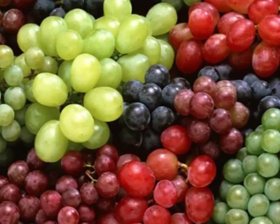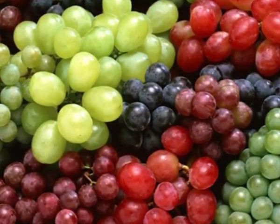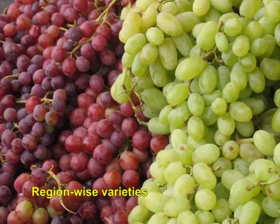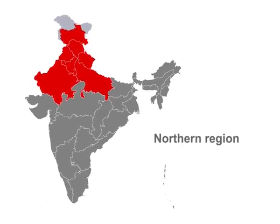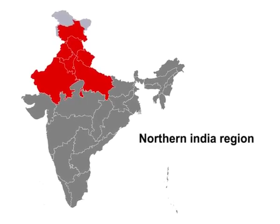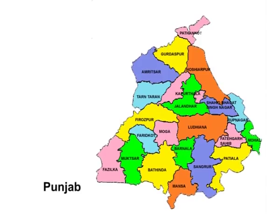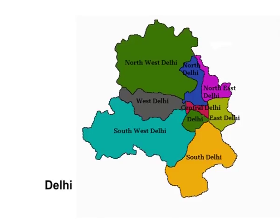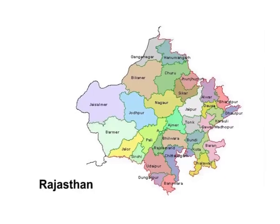Varieties are classified based on three criteria. The first is region-wise varieties, that is, the most preferred varieties in different regions. The first region is Northern India, comprising states like Haryana, Punjab, Delhi, Western Uttar Pradesh, and Rajasthan.